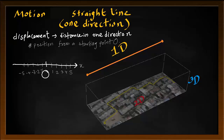Sometimes the letter S is also used for displacement. We have two things to remember: first, the direction. If we move towards the right, we call it positive displacement. If we move towards the left, we call it negative displacement. The next thing is the value of the displacement itself, which we can call the distance.